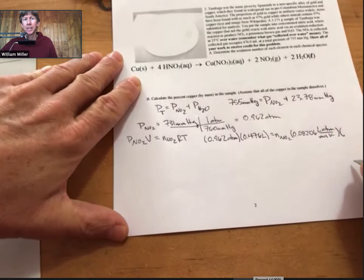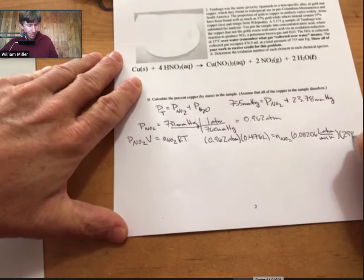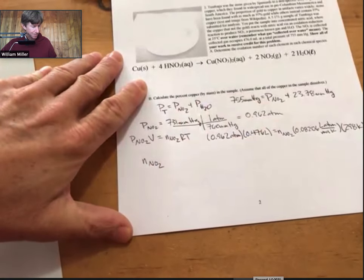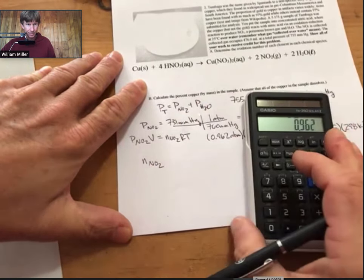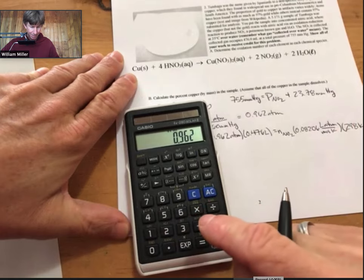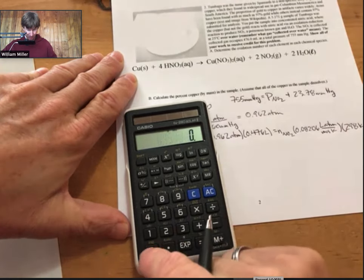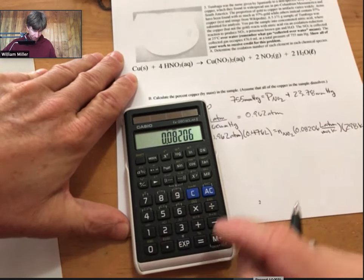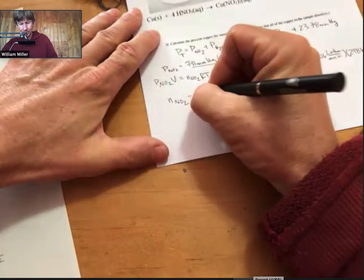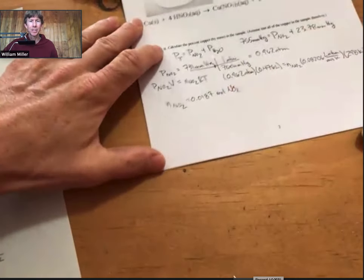And our temperature, which is 25 degrees Celsius and converts to 298 kelvin. And multiply the numbers on the left, we get 0.0187 moles of nitrogen dioxide.